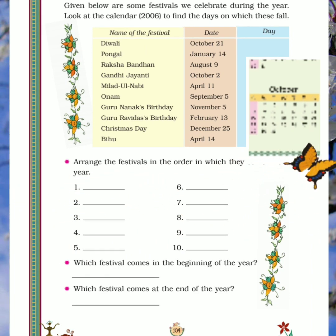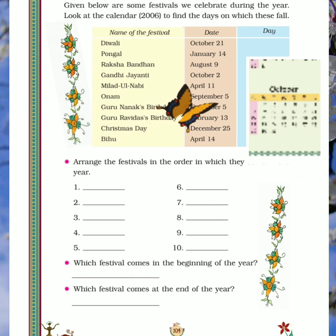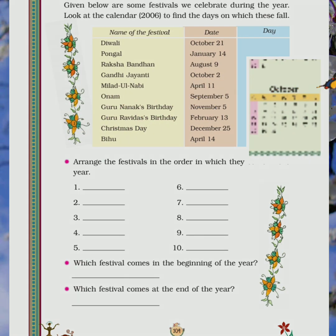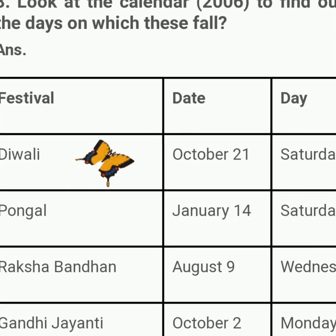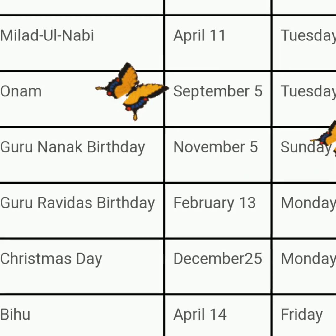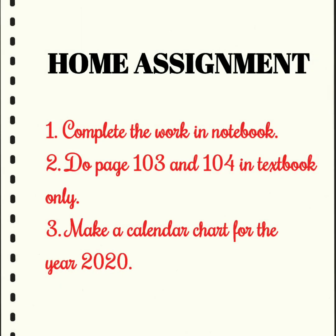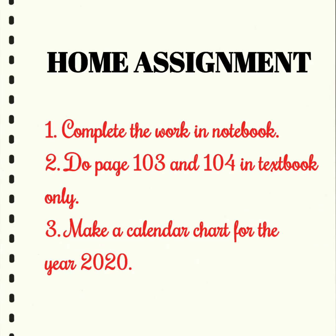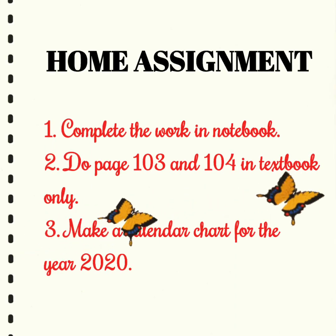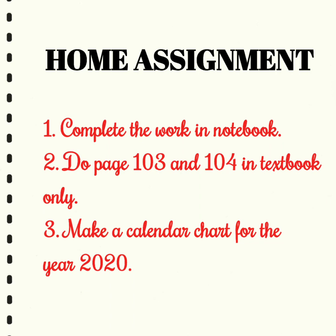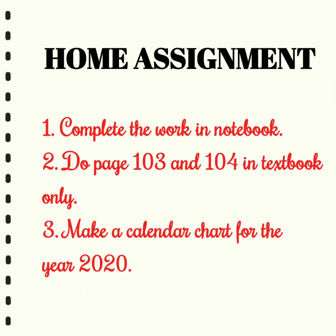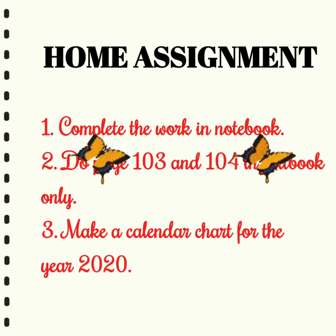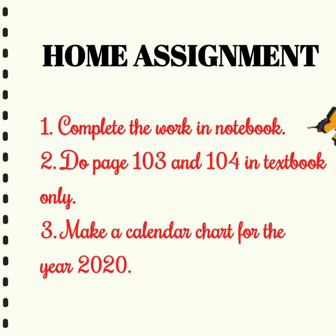Next: arrange the festivals in the order in which they come in the year. Aapko yahan festivals ko arrange karna hai — pahle kaunsa festival aata hai. Toh sabse pehla month January hai — January ke month mein kaunsa festival aata hai? If it is mentioned, write it, then February dekho, and so on. Complete your assignment — ye aapka homework hai. Complete the work in notebook. Do pages 103 and 104 in the textbook, aur 2020 ke liye ek calendar chart banana hai.